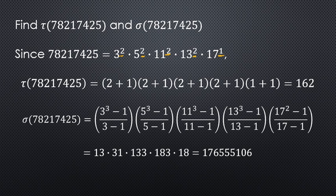Now for sigma: p1 to the k1 plus 1, so it's 3 cubed minus 1 all over 3 minus 1. Then we have 5 squared, so for sigma it's 5 cubed minus 1 all over 5 minus 1. And so on with the remaining terms: 11 cubed minus 1 over 11 minus 1, then 13 cubed minus 1 over 13 minus 1, and 17 squared minus 1 over 17 minus 1. Calculating each of those individually gives us 13, 31, 133, 183, and 18, respectively. Taking the product of those gives us 176,555,106.